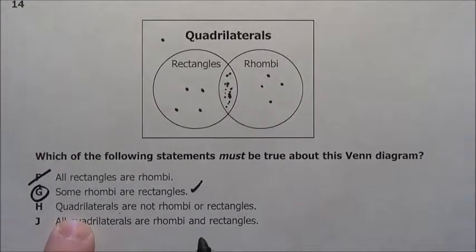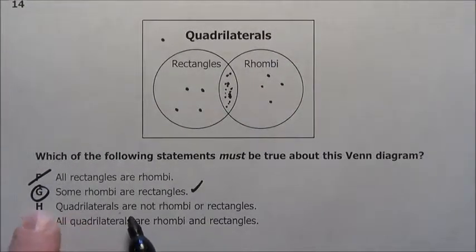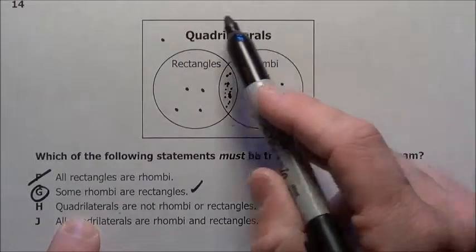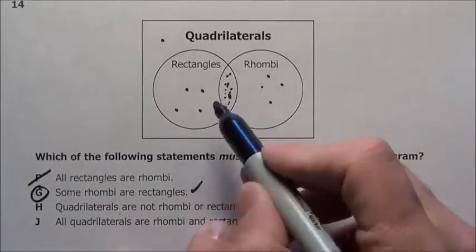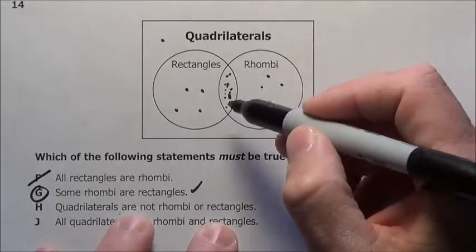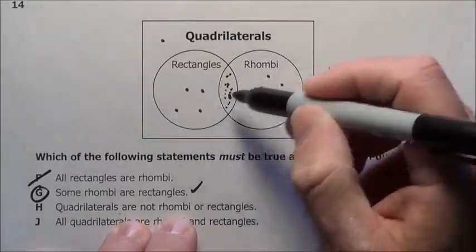Now let's just figure out these other H and J. Quadrilaterals, anything in here, are not rhombi or rectangles. In other words, it says quadrilaterals are not in here. Well, yes, some of these things...